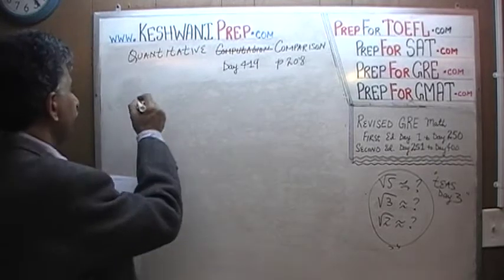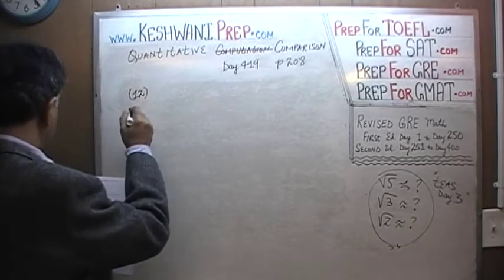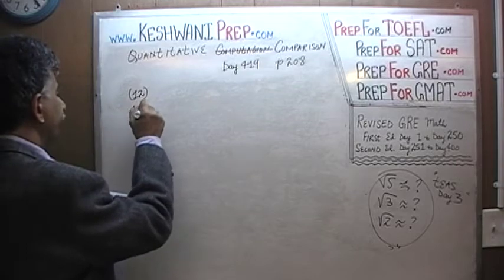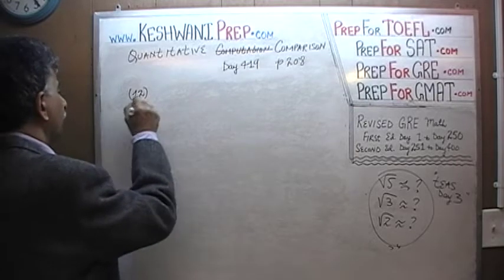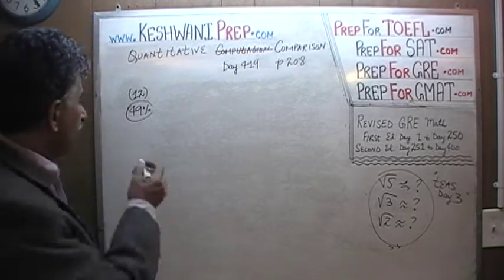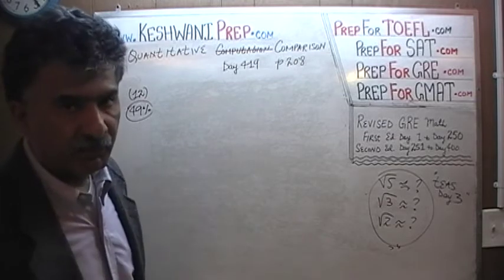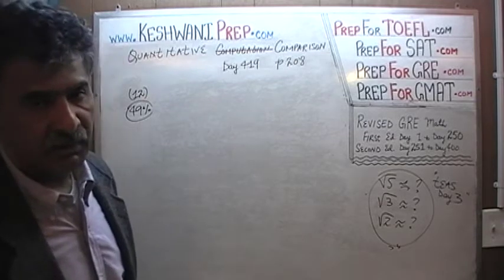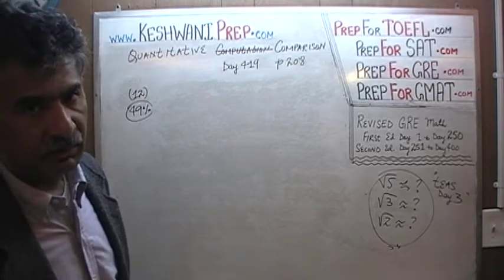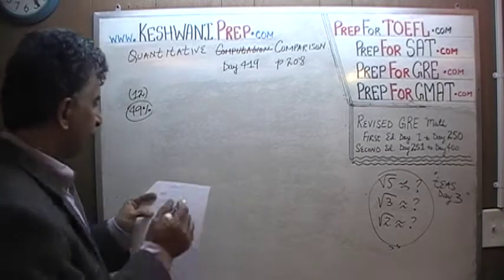Here's problem number 12. When it was given in the real exam, only half the people got it right — 49% of the people got it right, and 51%, a slight majority, actually did get it wrong.